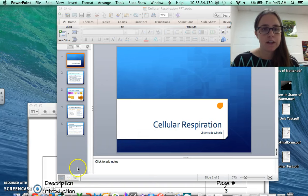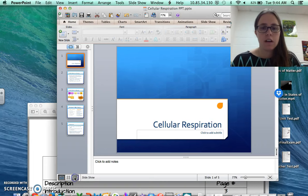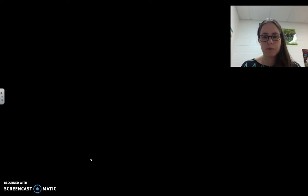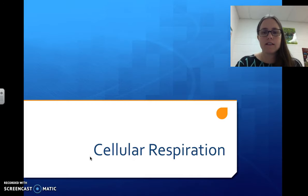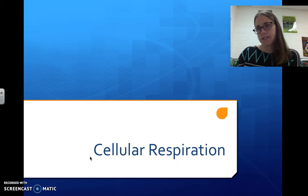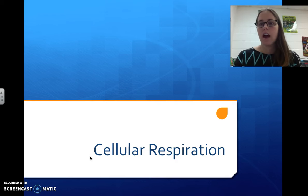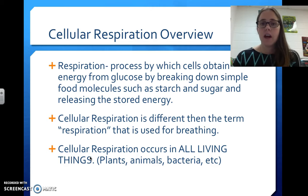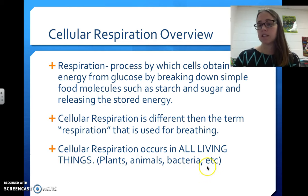We are going to learn about cellular respiration now. Cellular respiration is basically the opposite process, or the inverse process, of photosynthesis. Photosynthesis happens only in plants and other single-celled bacteria — it does not happen in animals. Conversely, cellular respiration happens in all living things: plants, animals, bacteria. Every single organism needs cellular respiration.